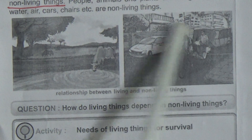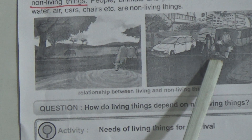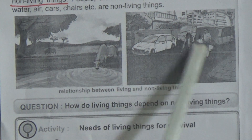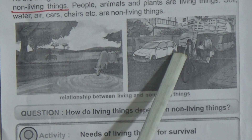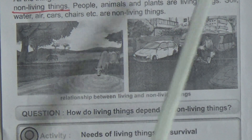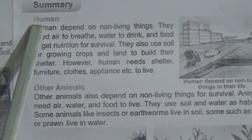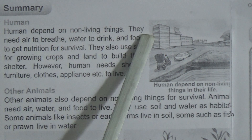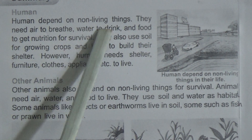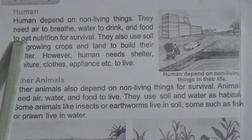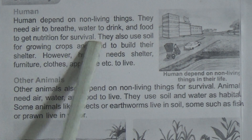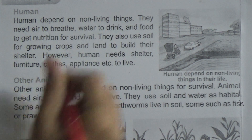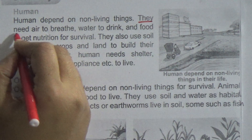Who are using these non-living things? That is the living thing — we are living things. We are using all non-living things for our survival. Now, come to the next phase — that is the summary. Humans depend on non-living things. They need air to breathe, water to drink and food to get nutrition for survival. Dear students, this line is very important.